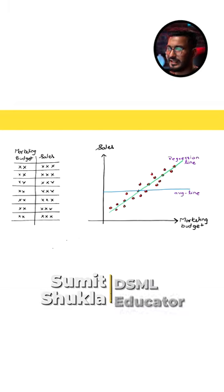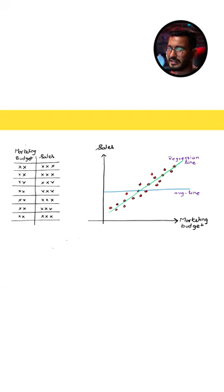Let me explain this. Let's say we have the data of a marketing company, the amount of marketing budget they have invested and the corresponding sales they were able to generate.